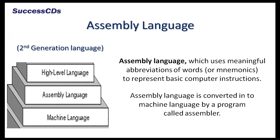Second is assembly language, which is also known as second generation language. Assembly language uses meaningful abbreviations of words to represent basic computer instructions, and emerged in the early 1950s. Although it is machine-dependent, it was an improvement over machine language because it uses words such as add or subtract instead of the zeros and ones used in machine language. Assembly language is converted into machine language by a program called assembler.